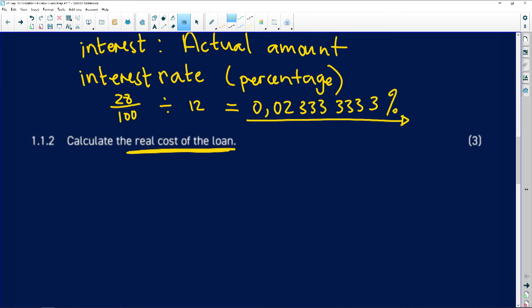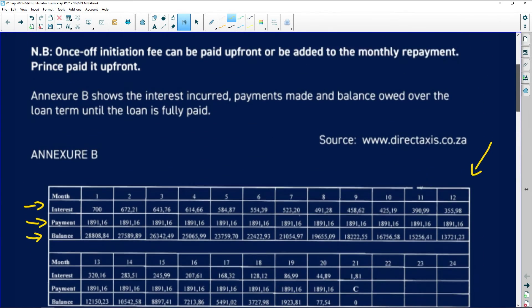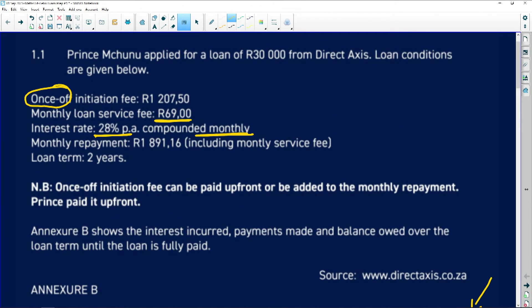Meaning that it already has the interest in it, it already has the service fee in it. So that becomes the real cost of the loan. So let's see how we would do this one. If you look at this question here, the beautiful thing about this particular question is the fact that everything has already been calculated for you there. So when we are doing the real cost of the loan,